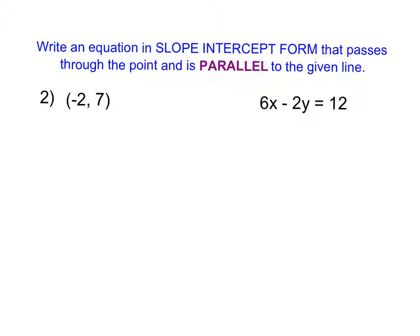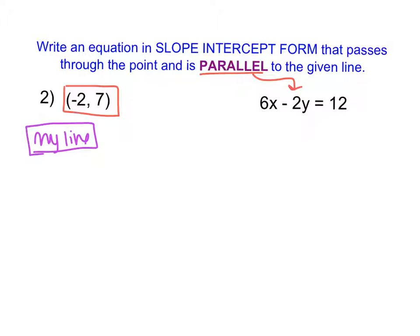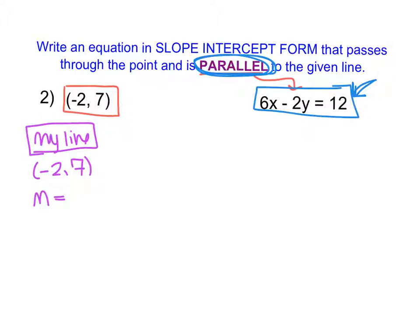In example 2, we're going to do the same thing: write the equation in slope-intercept form for a line that passes through this point and is parallel to this line. My line goes through the point negative 2, comma 7. To write an equation I need a point and a slope, so I need to find my slope. I can use the information about the parallel lines — since I am parallel to the line boxed in blue, if I find its slope, I can find the slope of my line.